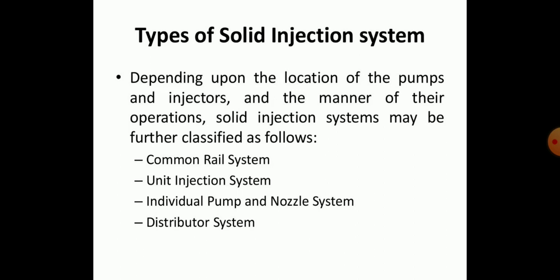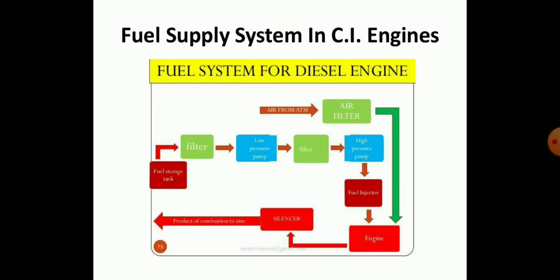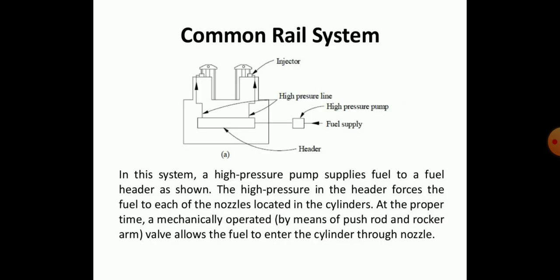There are four major injection systems, depending upon the location of the pumps and injector and the manner of their operation, whether it is solid injection or a combination of both. The further classification of this system includes the common rail system, unit injection system, individual pump and nozzle system, and distributor system. The fuel supply system for diesel engine can be seen on your screen.